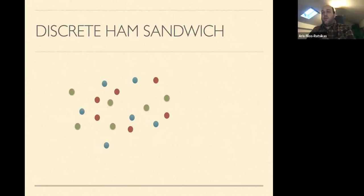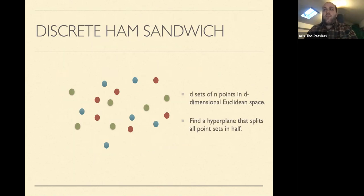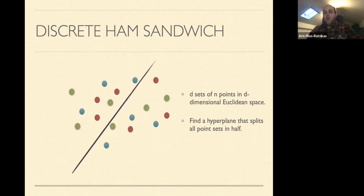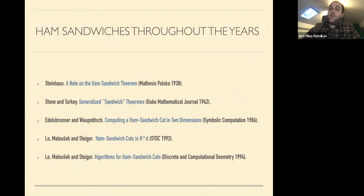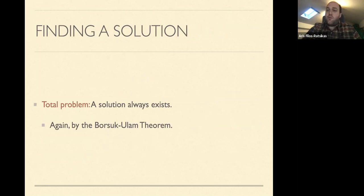This brings me to the third problem: the discrete ham sandwich problem. We have sets of points in d-dimensional Euclidean space, each set of even cardinality, and we want to find a hyperplane that splits all sets in half — on one half-space we have half the points and on the other half-space the other half, for every color. This is a very old problem, dating back to the 1930s in its continuous form with measures instead of points. It is also a total problem: a solution always exists, proven again via the Borsuk-Ulam theorem.